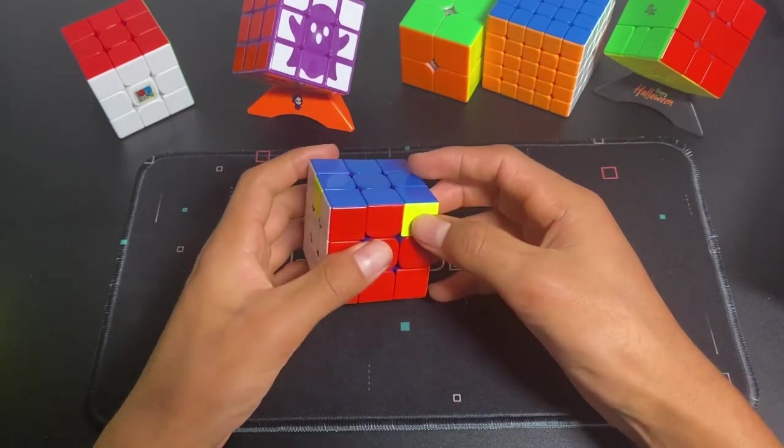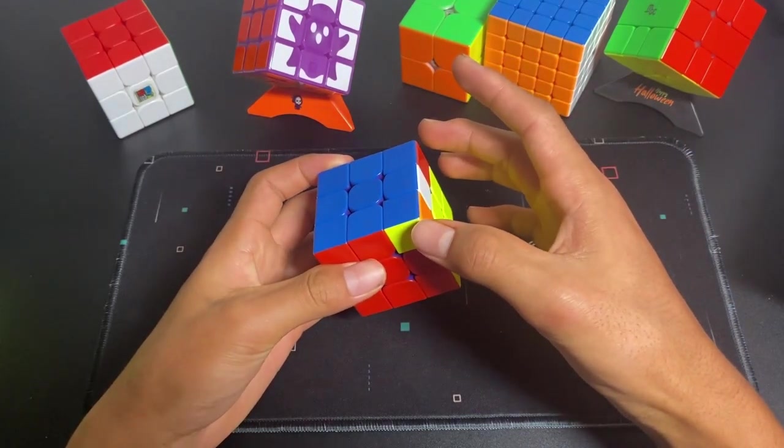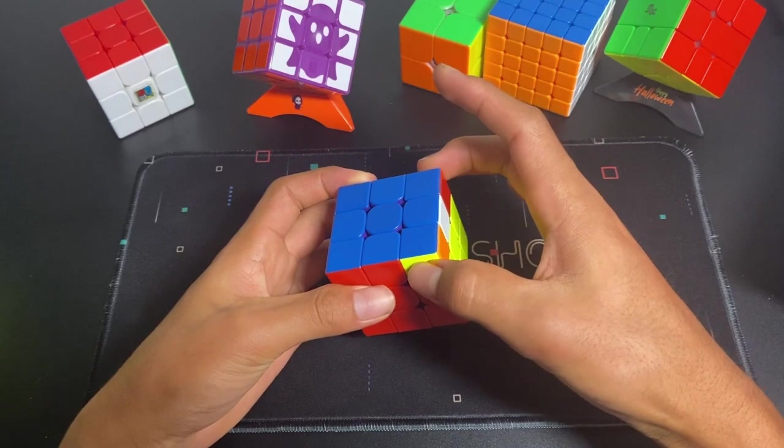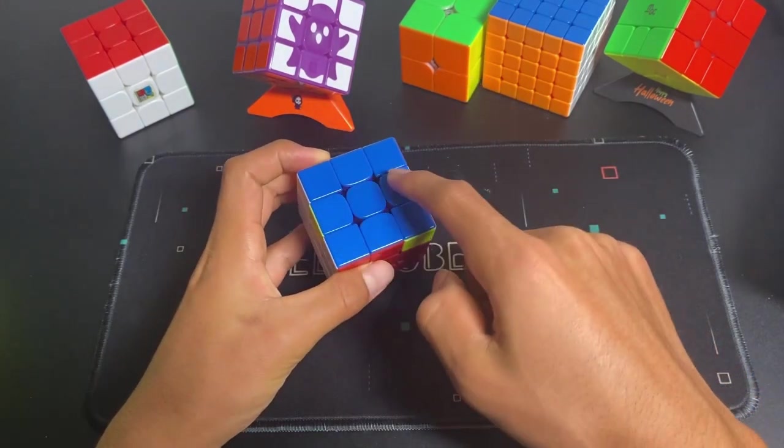So here, I see this case. And the algorithm that I'm about to do swaps these two corners and this edge with this edge.